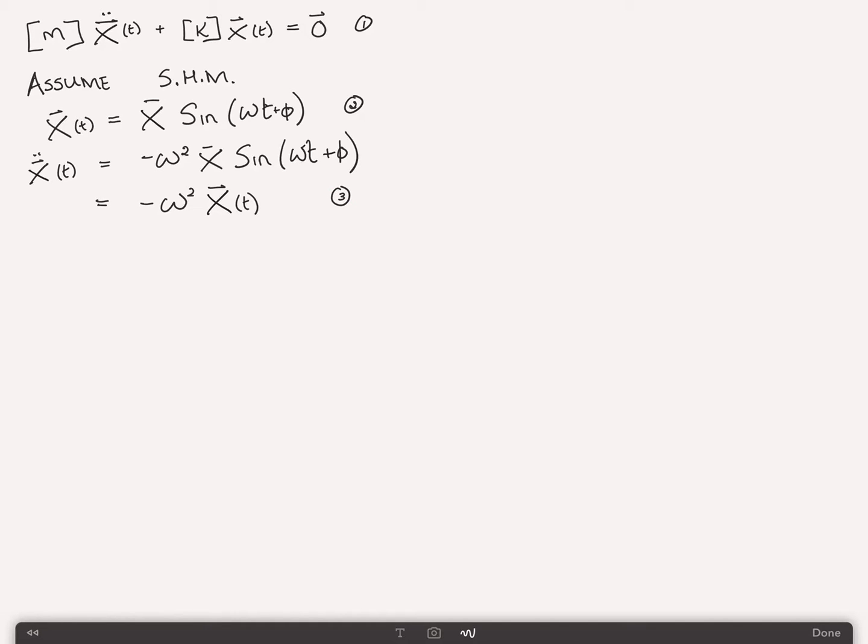Now we want to substitute both 2 and 3 into 1, and substituting that gives us m times minus omega squared x of t plus kx of t equals 0. And this will be rewritten as k minus omega squared m times x of t equals 0. We'll call this equation 4.